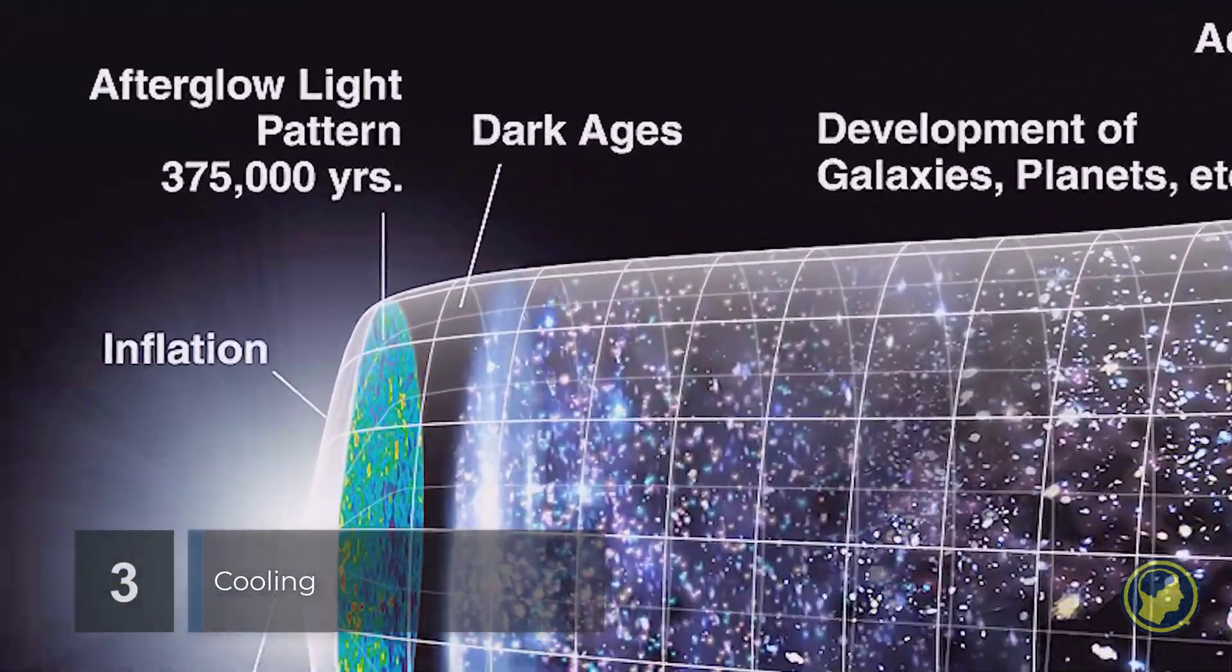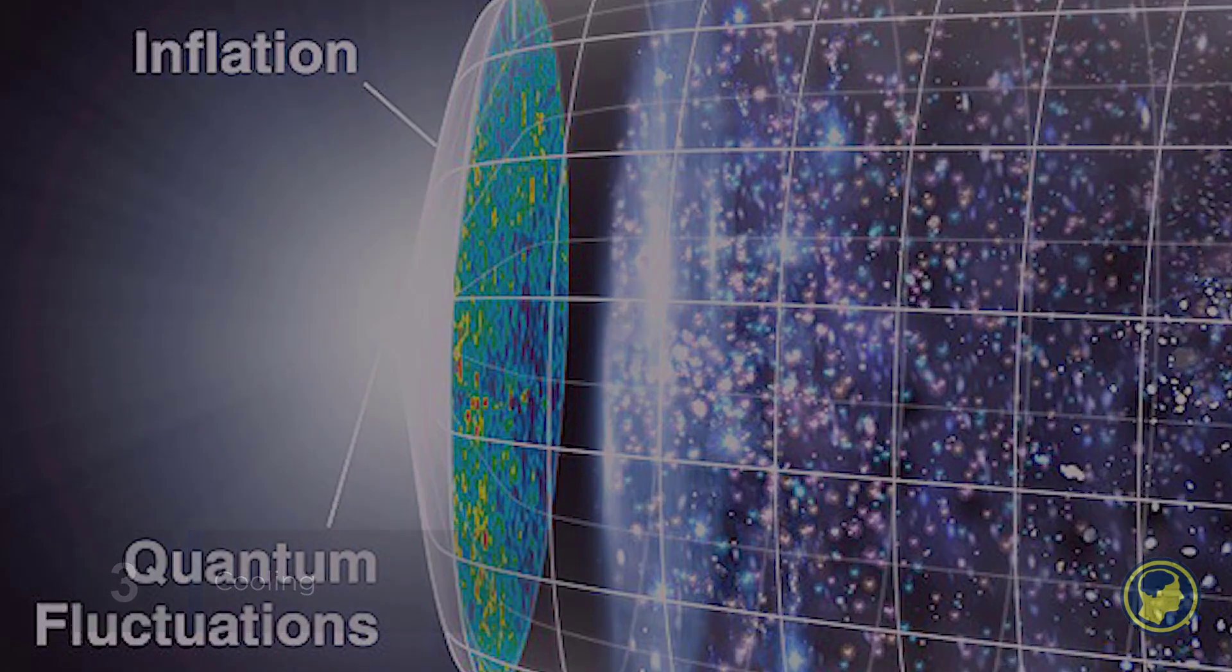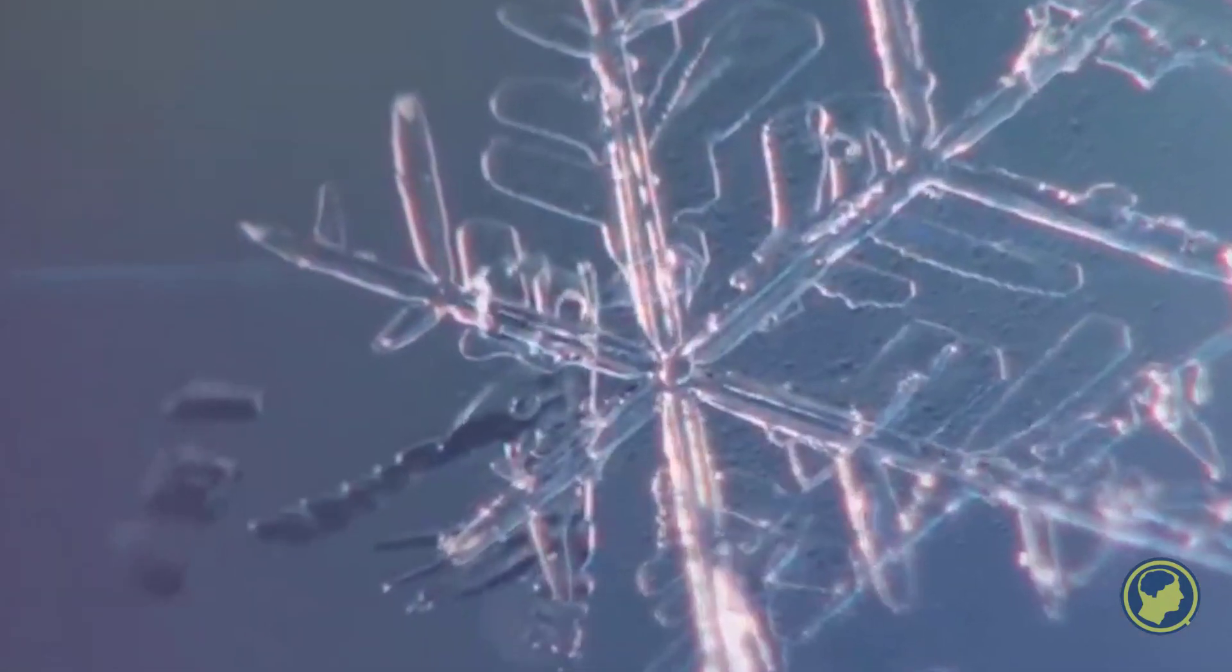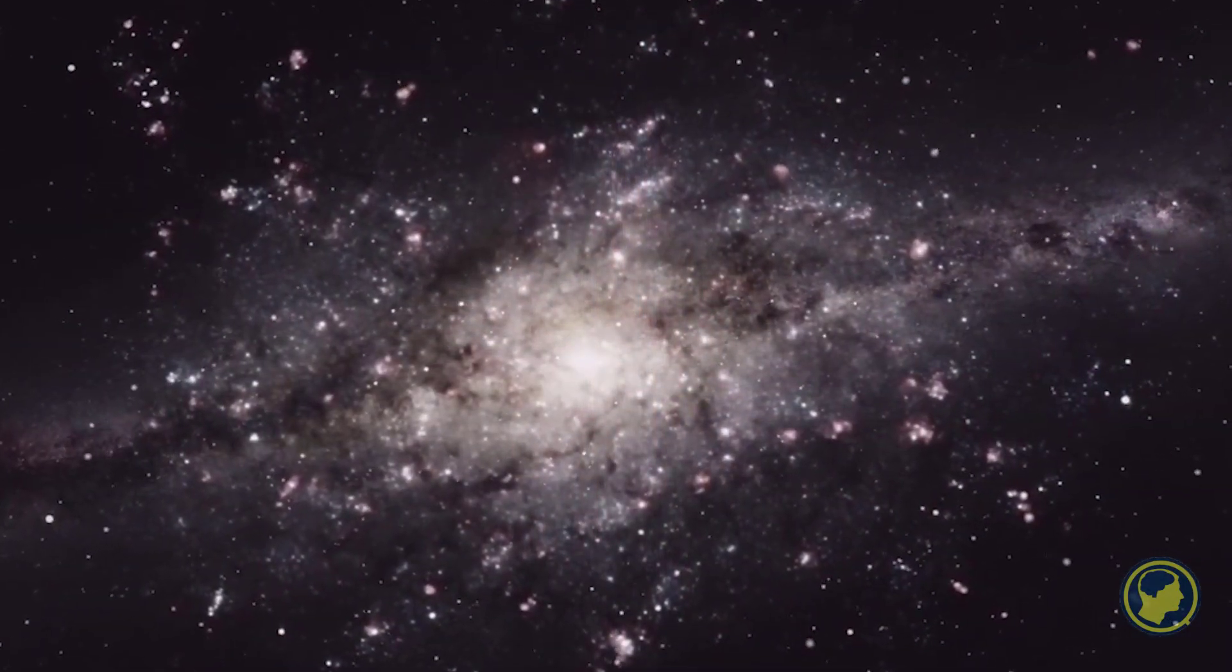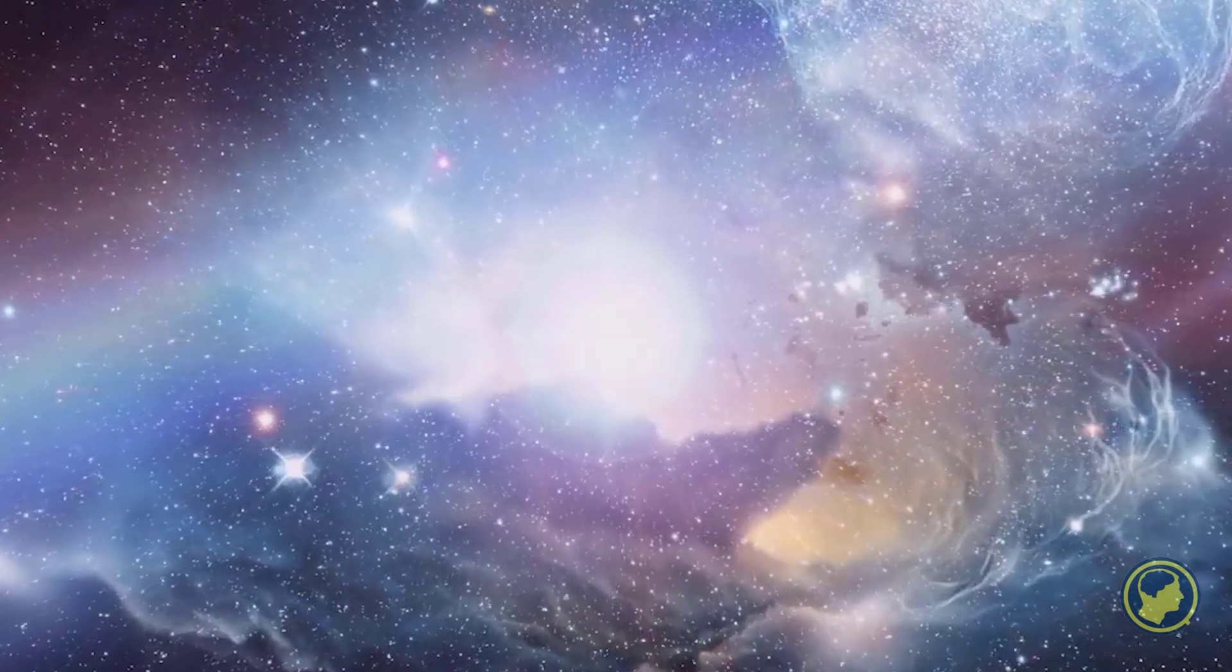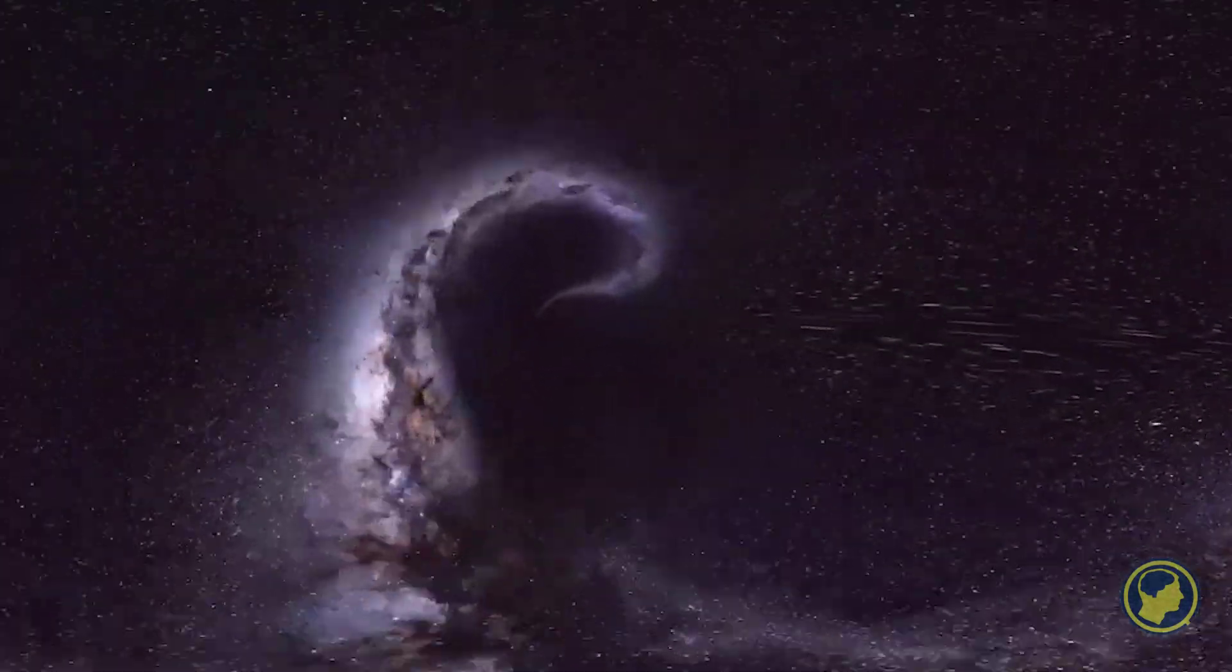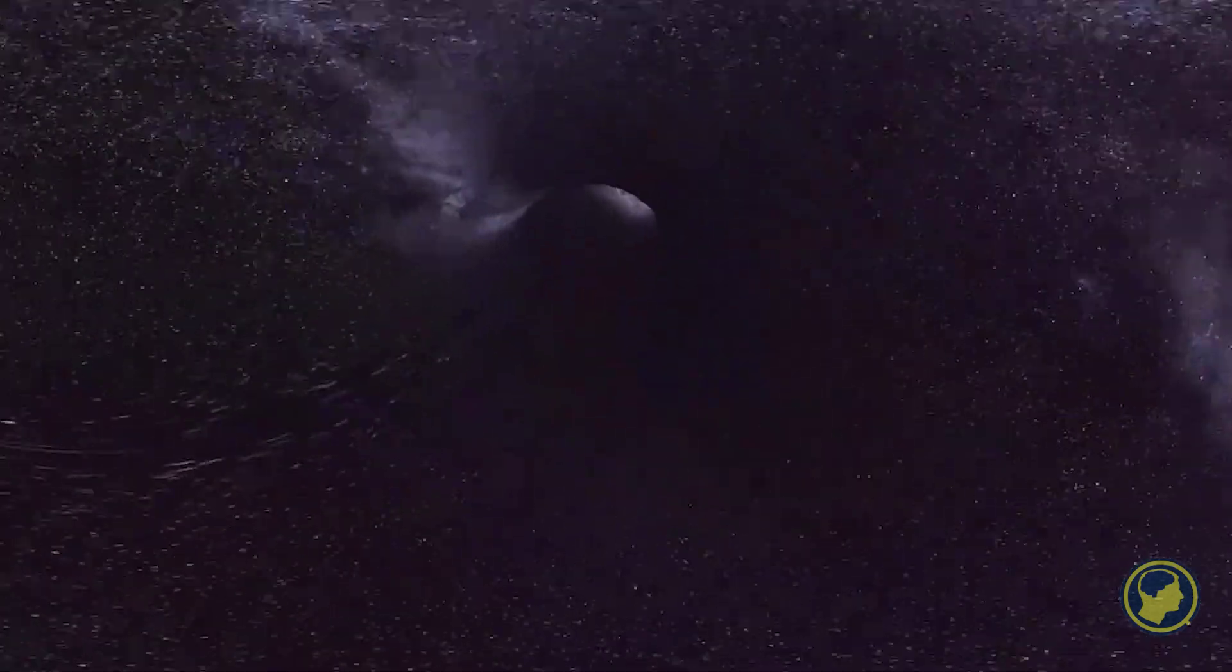After the initial burst of exponential growth slowed down, the temperature of the universe continued dropping. This precipitous drop resulted in a continual decrease in the typical energy level of each particle in the universe.